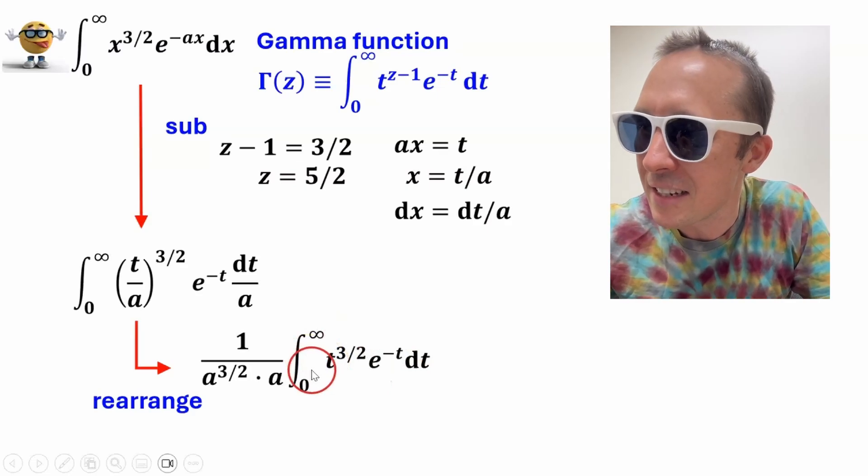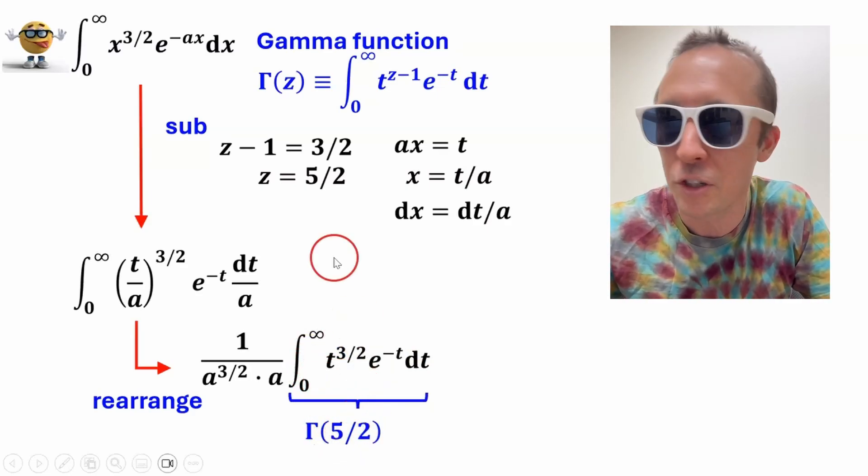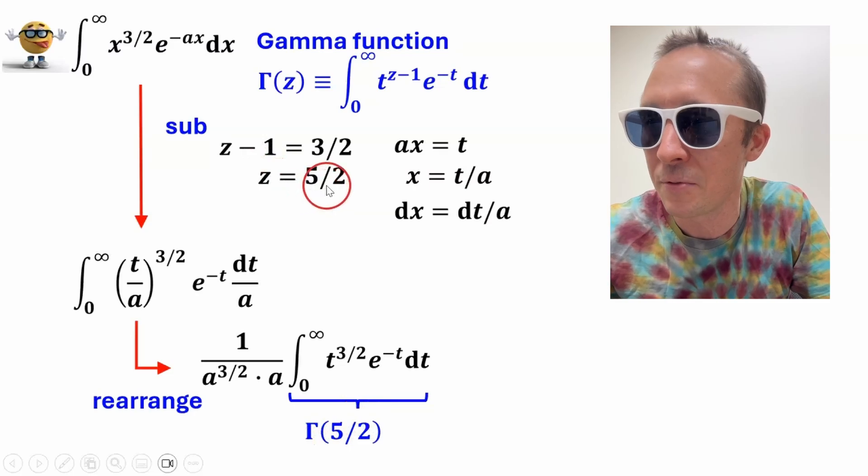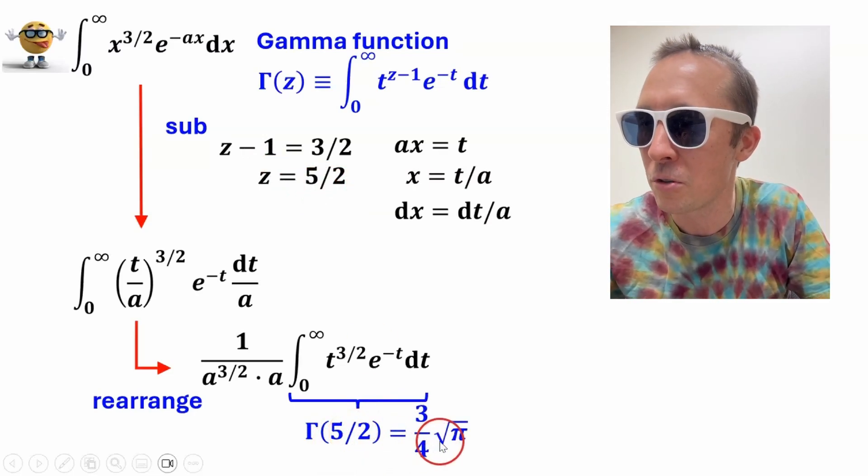and at this point, this is exactly like the gamma function, where z equals 5 over 2, that's what we defined it as, z equals 5 over 2, and this has a well-known value of 3 quarters root pi,